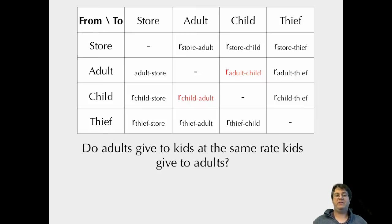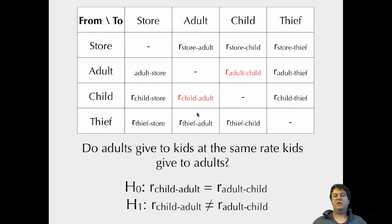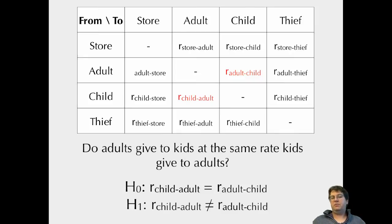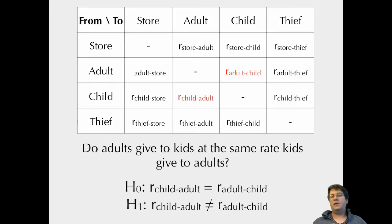I can think of other hypotheses to test. Do adults give to kids at the same rate that kids give to adults? My null model is that the rate of going from child to adult equals the rate from adult to child. I can also allow them to be different. As biologists, beyond statistical significance, we also think about biological significance — if the rate is 10% different, does that matter biologically? We can weight results across different models to get good parameter estimates of these rates.